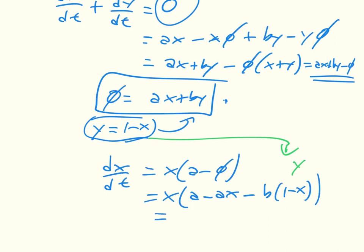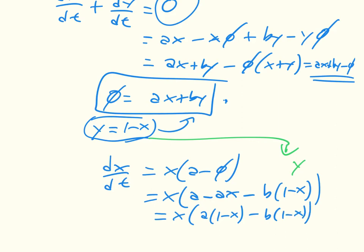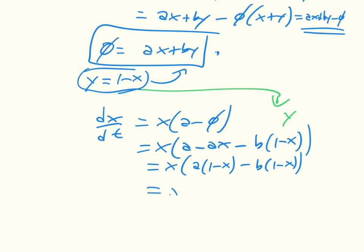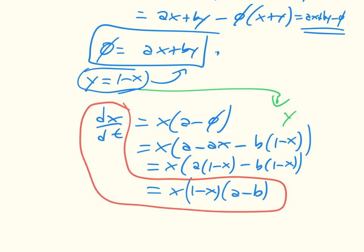Which is just going to be equal to x times a minus ax minus b times 1 minus x, which after a little bit more work is equal to x times a times 1 minus x minus b times 1 minus x, which we can just write out as x times 1 minus x times a minus b. Now, we can solve this differential equation if we really wanted to, but the more interesting thing to note is that we don't need to.